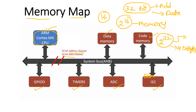The data may be anything. If I want to store data present in one of the registers of I2C into a data memory location, then the ARM Cortex-M4 processor needs to produce the address of that particular register and generate it on the address bus, which is equal to that particular memory location. Then only the processor can fetch the data present in that register. Once that address is generated, that particular register will get selected.